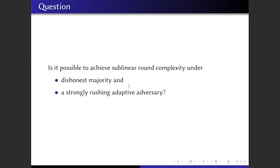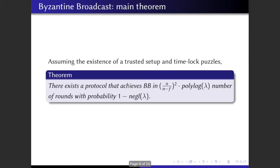It has been a long-standing open problem whether it is possible to achieve sublinear run complexity under dishonest majority and a strongly rushing adaptive adversary. In this paper, we show that the answer is yes.